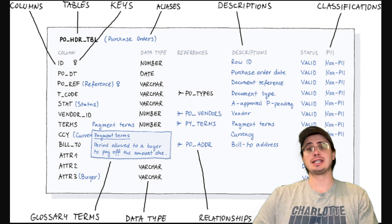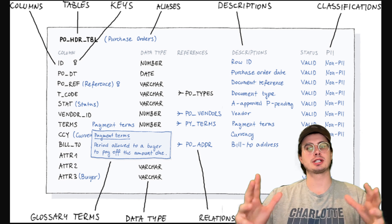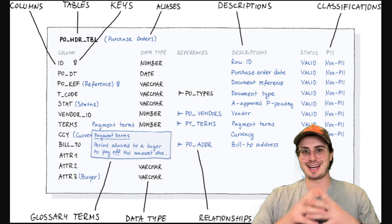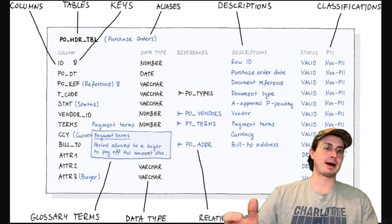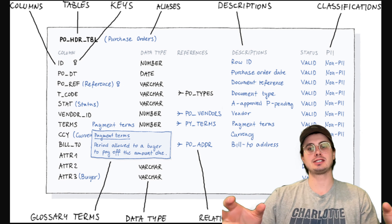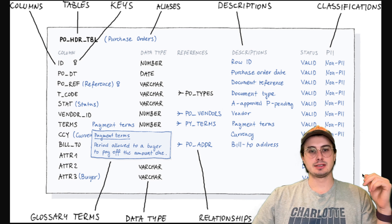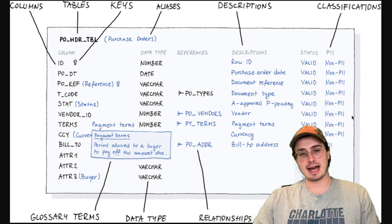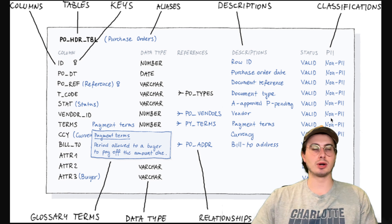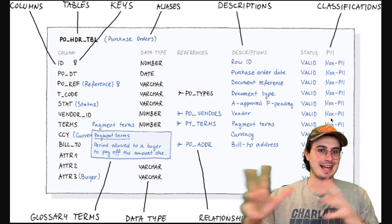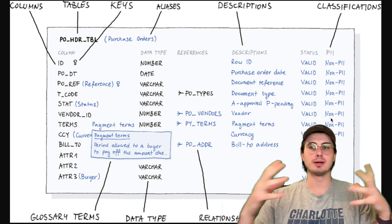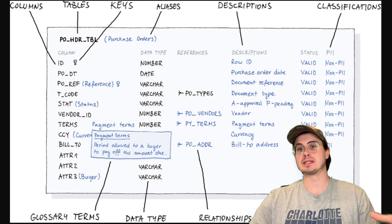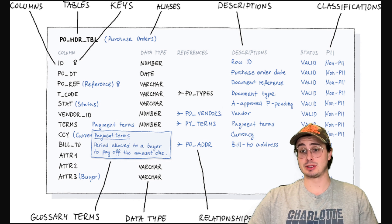Also, incorporate lineage — especially now that so many tools can produce open lineage — because seeing how a field is produced eliminates ambiguity. And use tagging and classification: label fields as PII, sensitive, deprecated, core metric, or whatever key classifications apply to your business, and make sure those tags are consistently applied across your organization for any data that meets those qualifications.